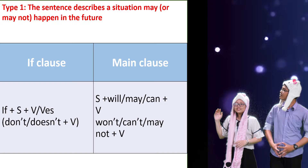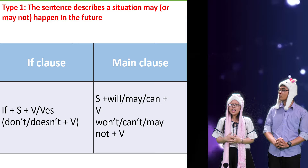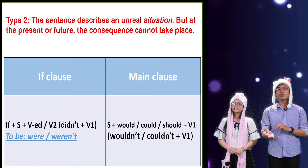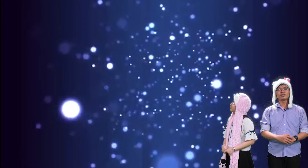Conditional sentence type one describes a situation that might or may not happen in the future. Here is the structure. And we continue with conditional sentence type two — it describes an unreal situation. The condition is always unreal at present or in the future, and the consequence may not take place. Here is the structure. I think we all understand it a bit better now. But just to make sure, let's put what we've learned into practice.